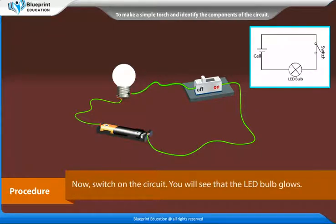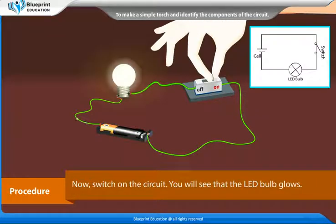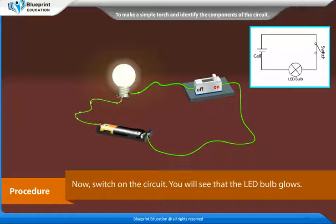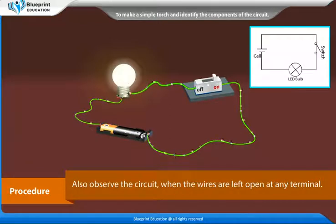Now switch on the circuit. You will see that the LED bulb glows. Also observe the circuit when the wires are left open at any terminal.